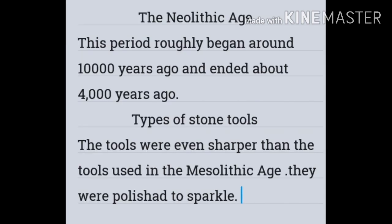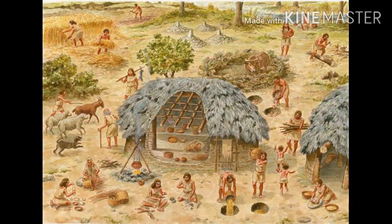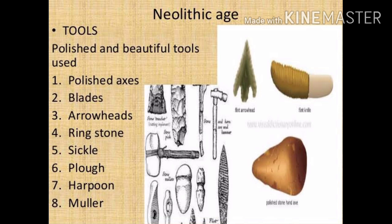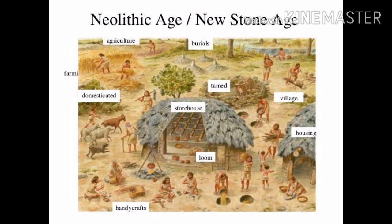The next phase is the Neolithic Age, which began roughly around ten thousand years ago and ended about four thousand years ago. During the Neolithic period, the life of early humans changed completely. They were no longer just hunter-gatherers moving from place to place. They formed settled communities, started domesticating animals, and for the first time in history began domestication. The tools were even sharper than those of the Mesolithic Age and were polished to a sparkle.